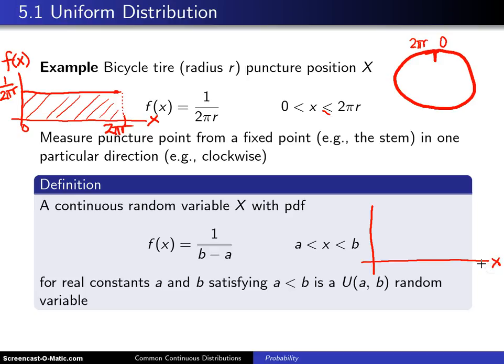Here is a picture of what all uniform distributions look like. Here is A and here is B. It will be constant between A and B, and the height here will be 1 over B minus A, which means if you take this length right here, which is B minus A, and multiply it by 1 over B minus A, you will get 1 as the area underneath the probability density function.